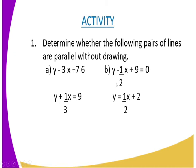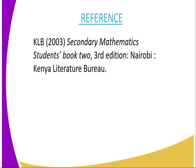Part B: the equation reads y minus a half x plus 9 equals 0, and the second line reads y equals a half x plus 2. Therefore, you are supposed to determine without drawing a Cartesian plane whether the two lines are parallel or not.